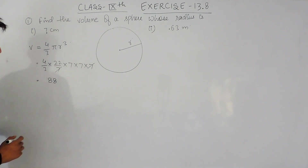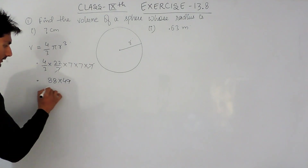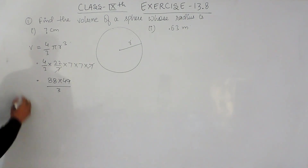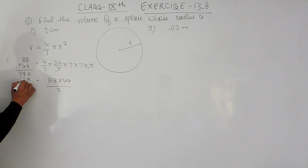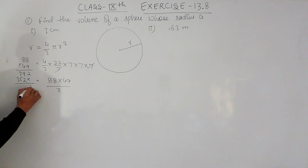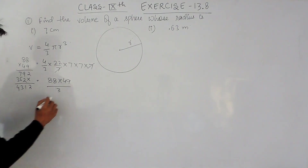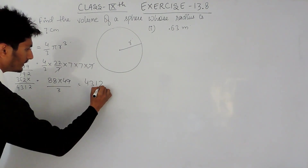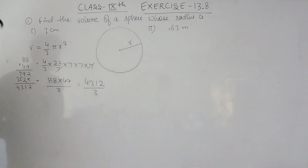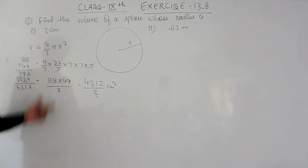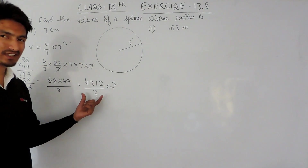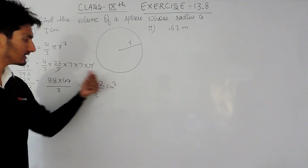Now multiplying 88 by 49, we get 4312. So the volume is 4312/3 centimeter cube. This should be the volume for the first case. If you want to convert this into decimals that is okay, or otherwise this fraction will be your answer.